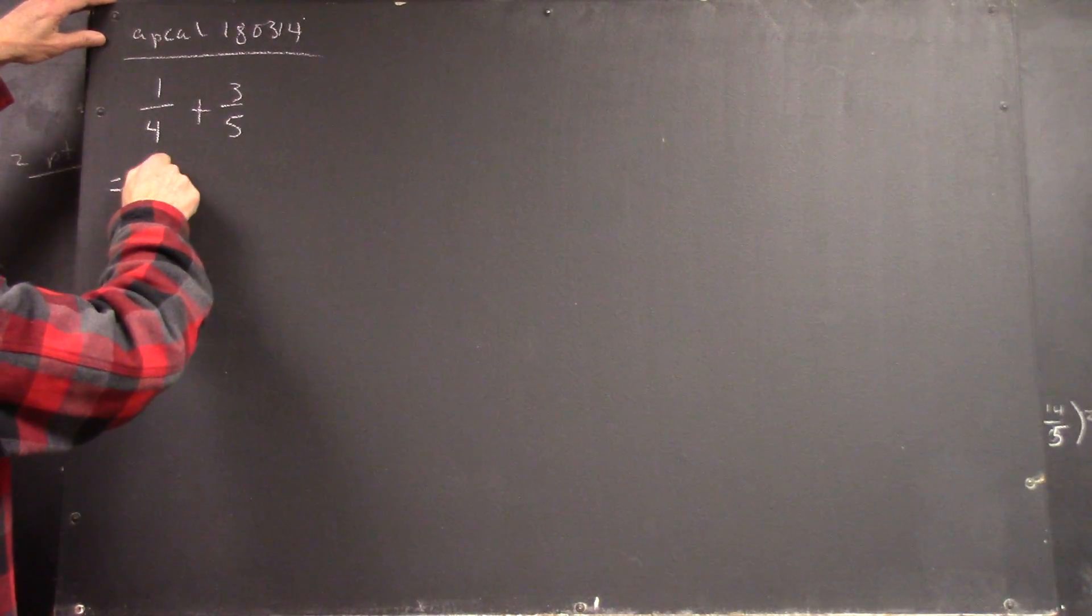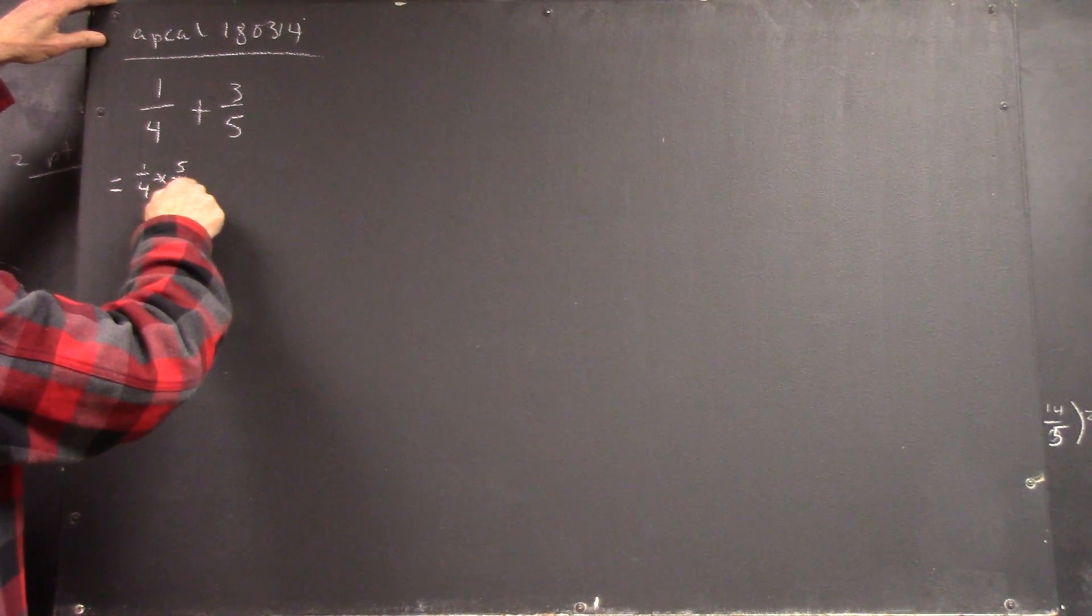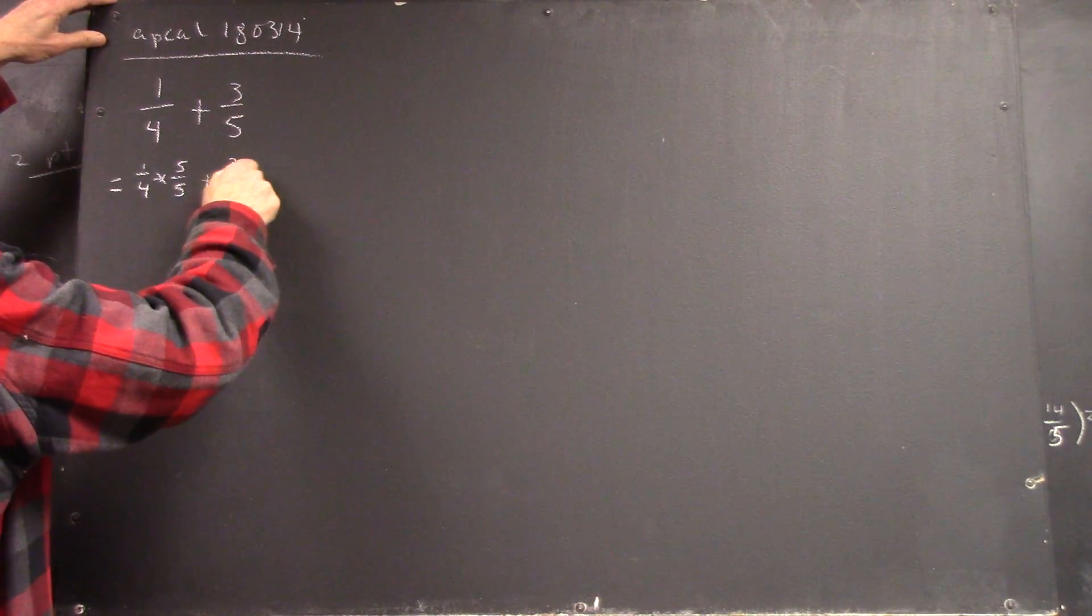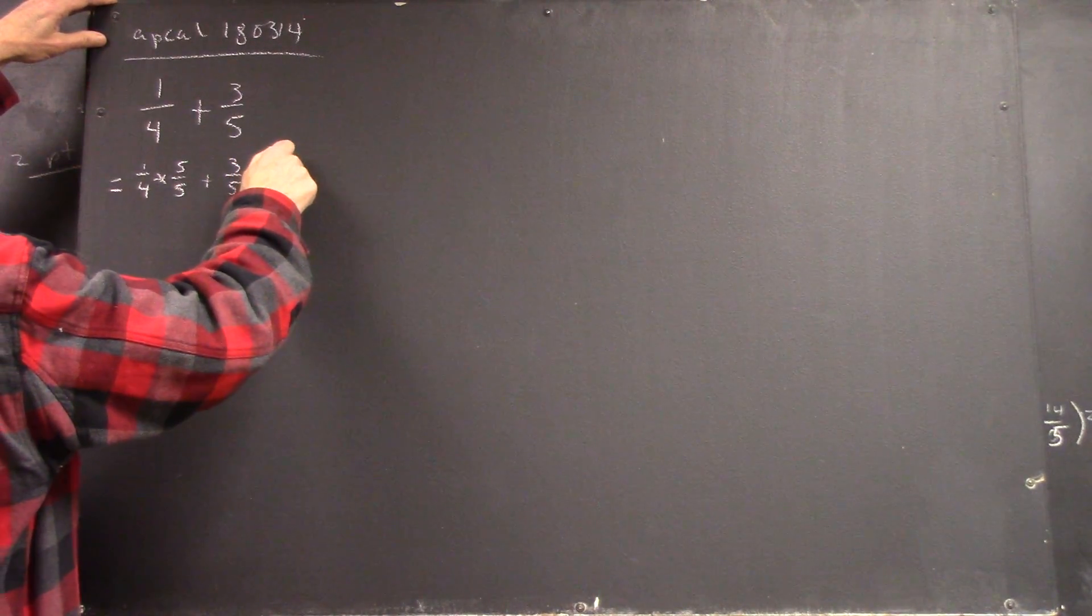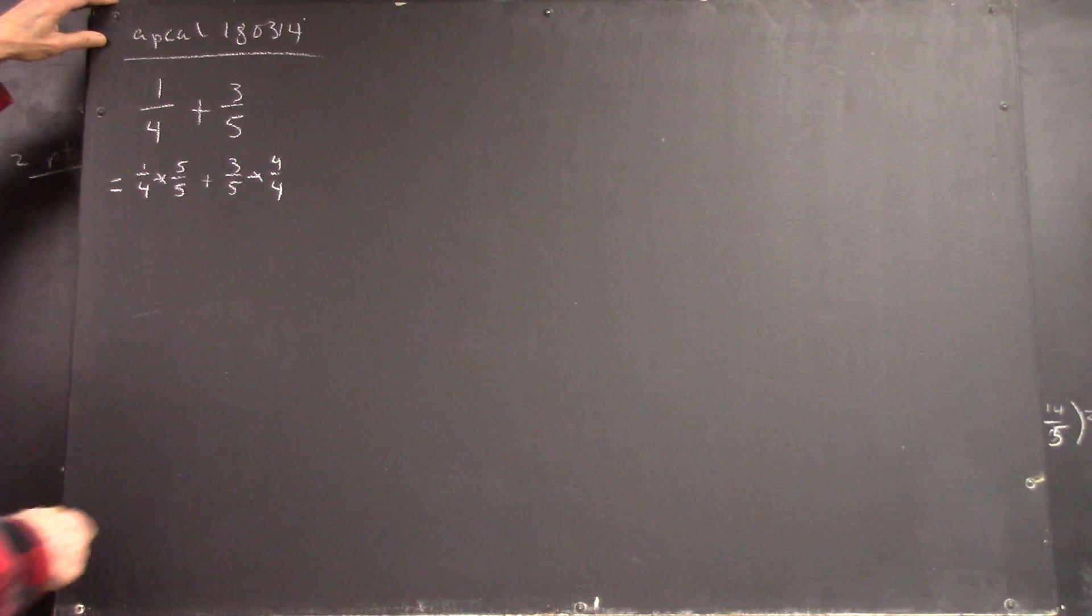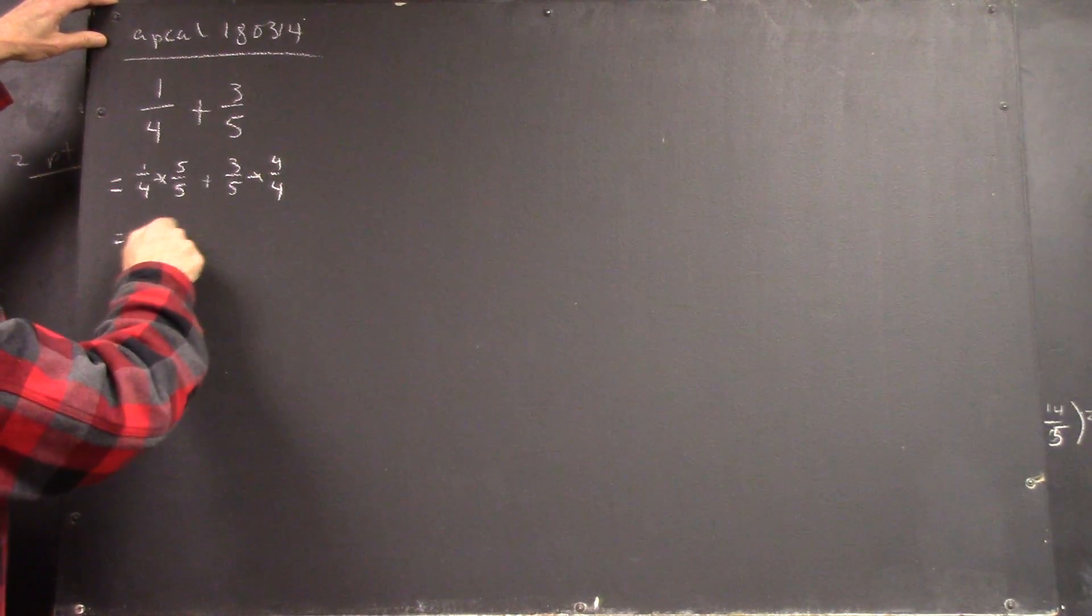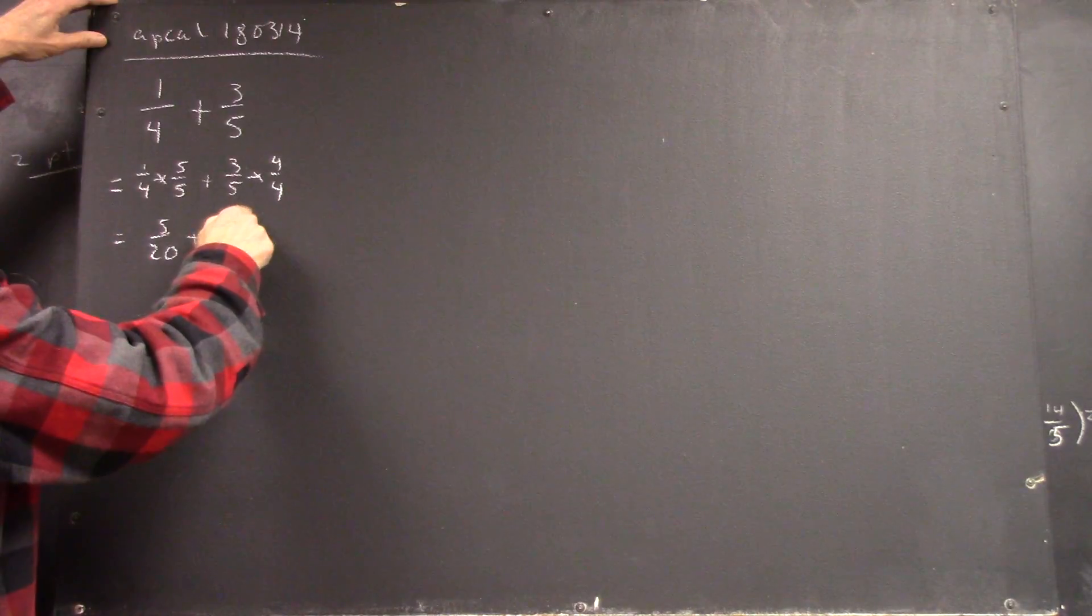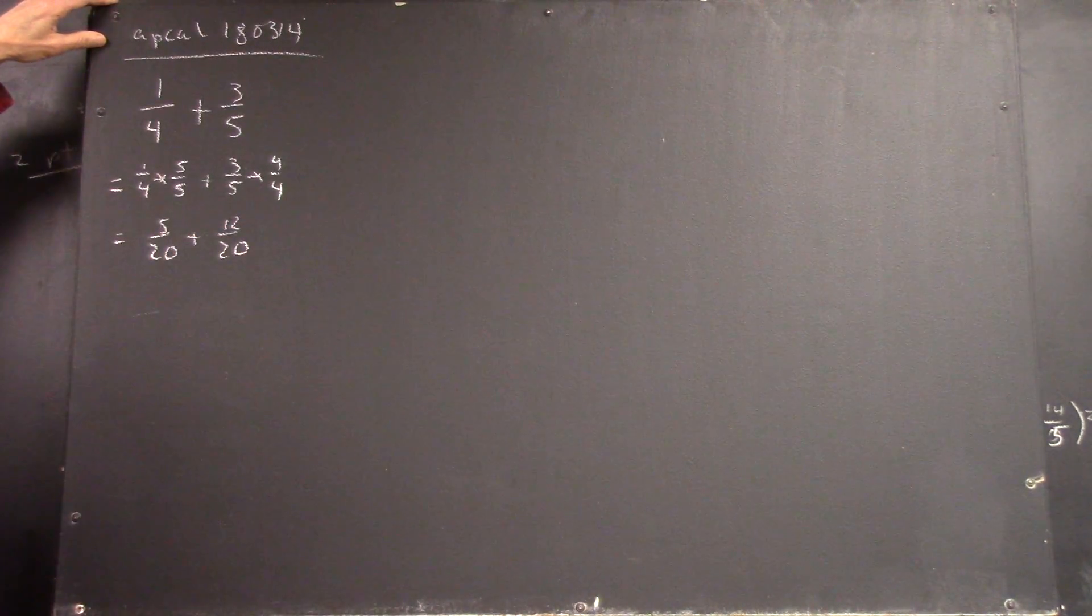So that's one-fourth times five over five plus three-fifths times four over four, giving you five over twenty plus twelve over twenty.